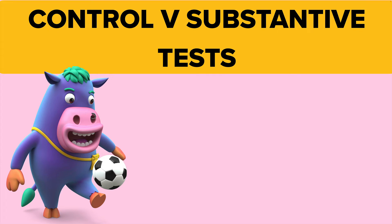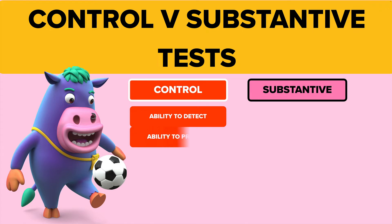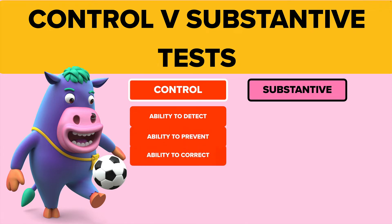Let's go through the difference between a control test and a substantive test. A control test is the ability to detect, prevent, and correct material misstatements occurring in the financial statements. So, what controls make sure material misstatements don't happen? Detect them, prevent them, correct them.